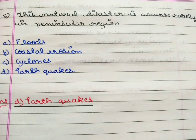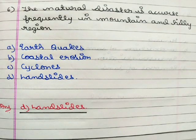Next question: which natural disaster occurs rarely in the peninsular region? Option A floods, option B coastal erosion, option C cyclones, option D earthquakes. The correct answer is option D earthquakes.